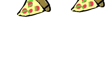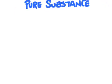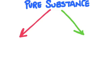Let's now take a look at pure substances. A pure substance can also be separated into two categories. To understand these categories, we must think smaller, much smaller.